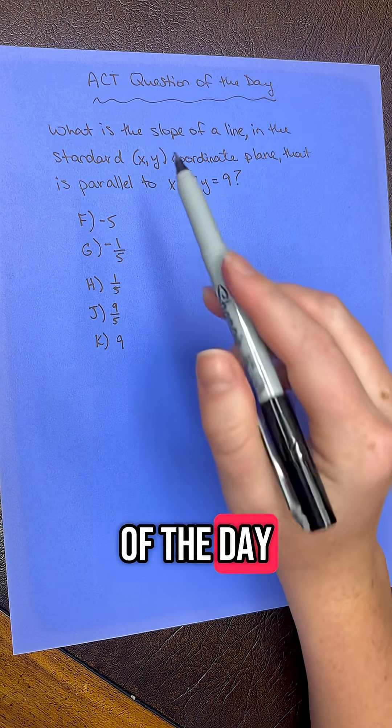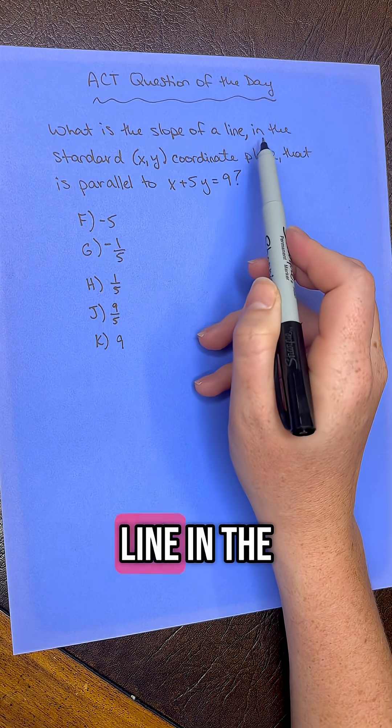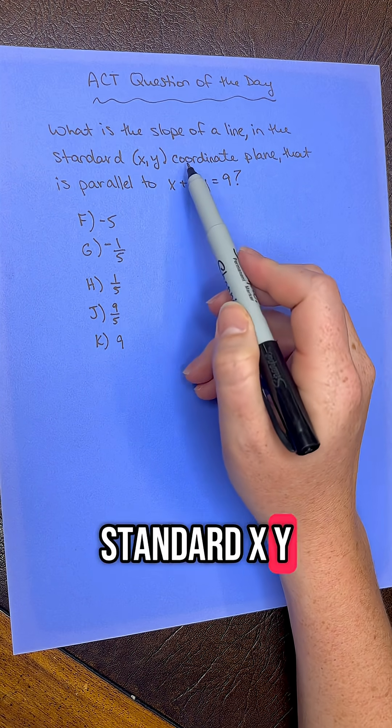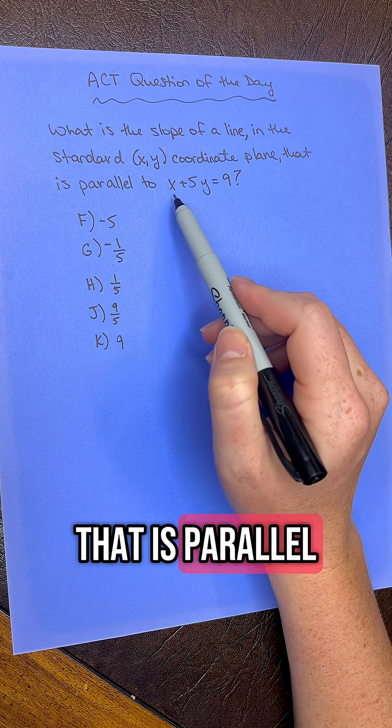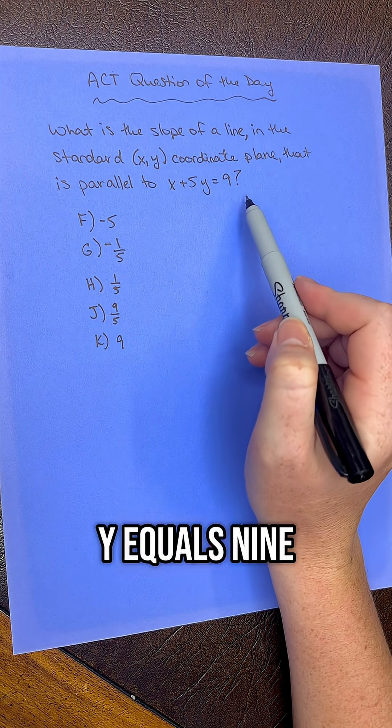ACT question of the day. What is the slope of a line in the standard x-y coordinate plane that is parallel to x plus 5y equals 9?